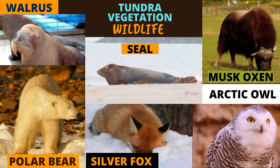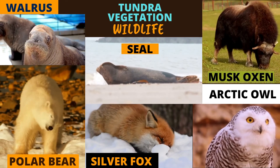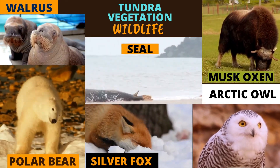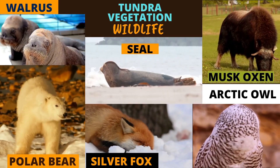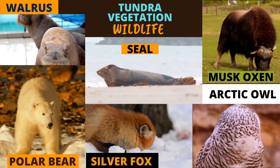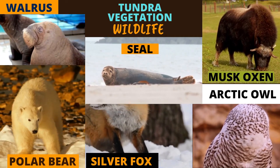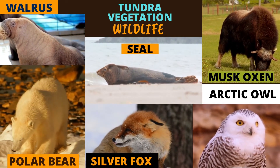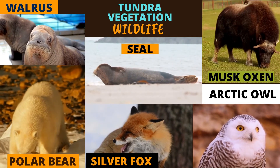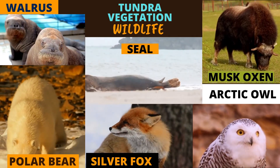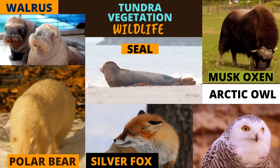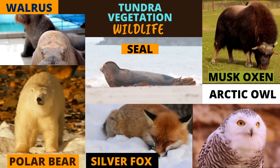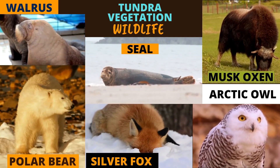What are some animals and birds that you can find in the tundra? The walrus, the polar bear, the silver fox, musk oxen, and the Arctic owl. Look at these amazing animals and birds that you can find in the tundra regions.